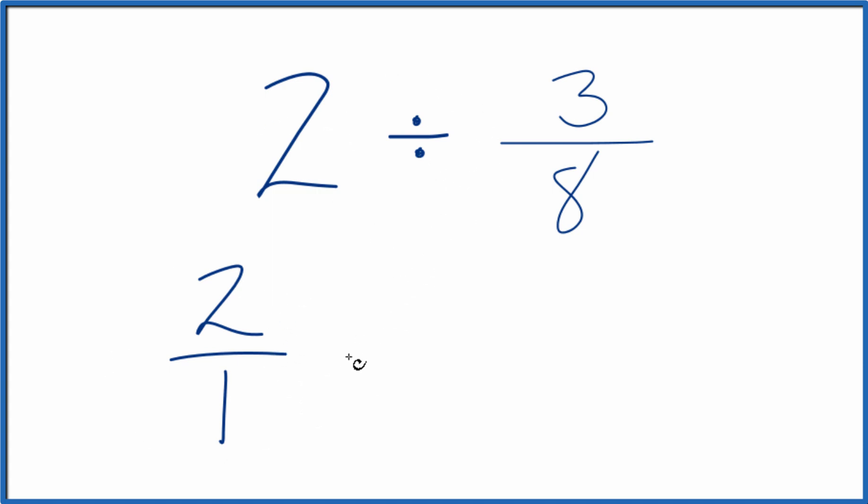Instead of division, we're going to multiply by the reciprocal of 3 eighths. To take the reciprocal of a fraction, you move the numerator to the bottom and the denominator to the top. So we have 8 over 3, 8 thirds.